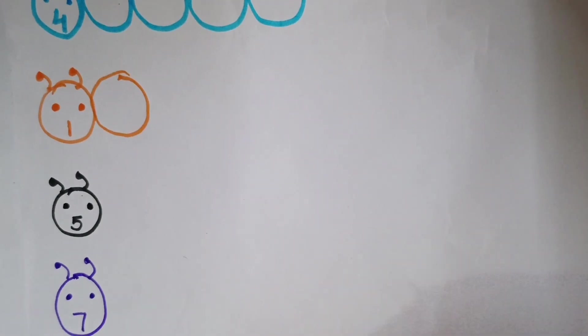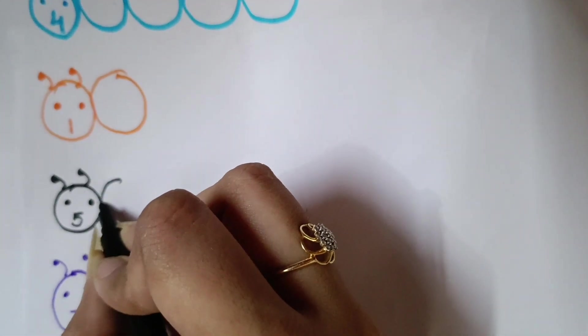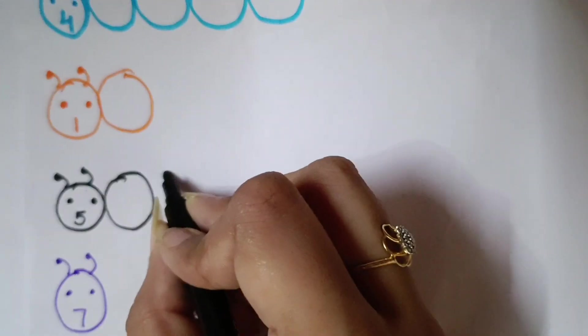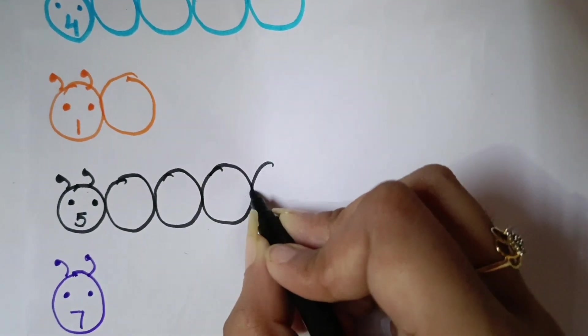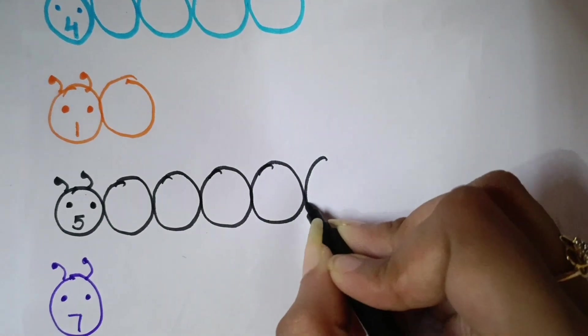Next number is 5. So, we will draw here 5 circles. 1, 2, 3, 4 and 5.